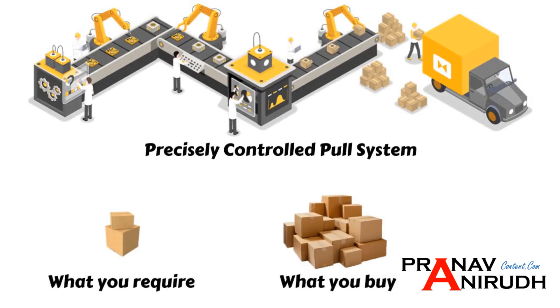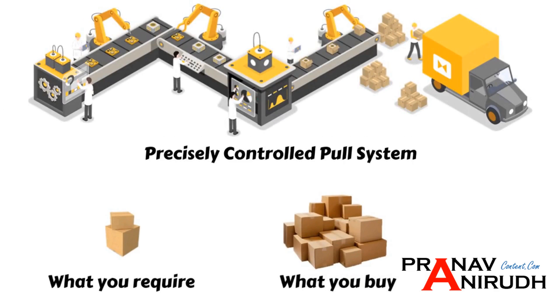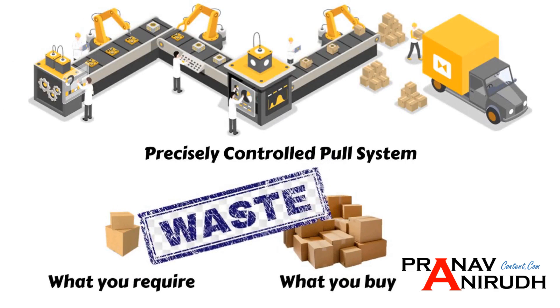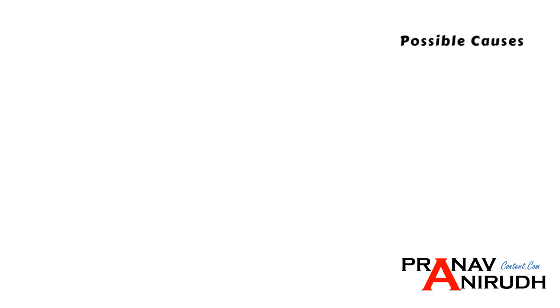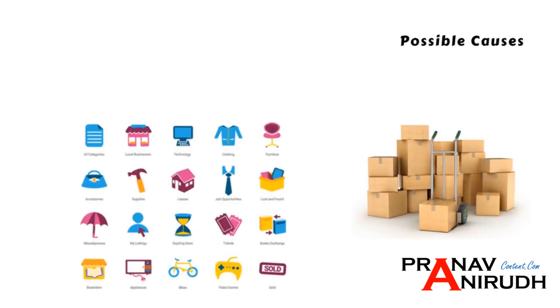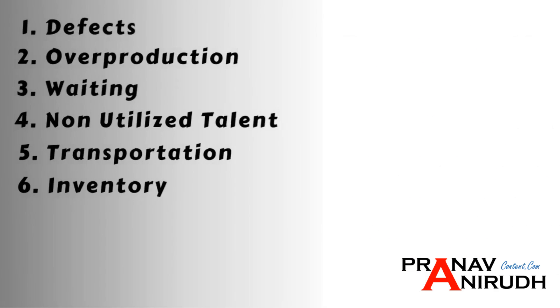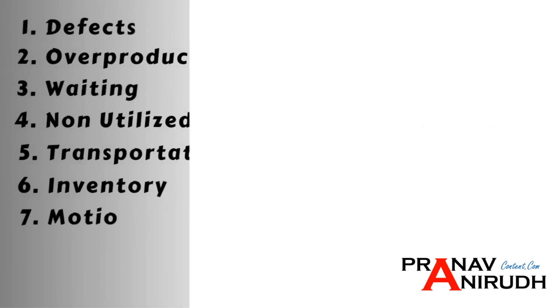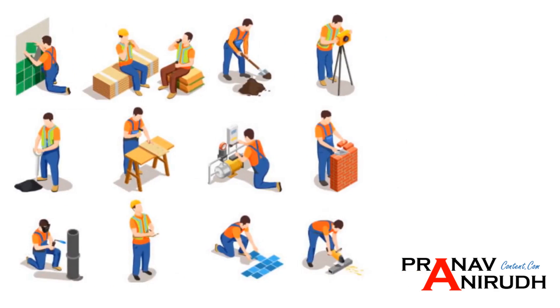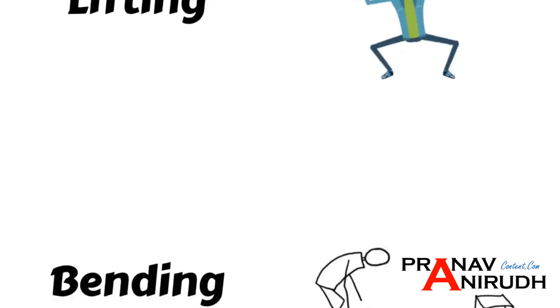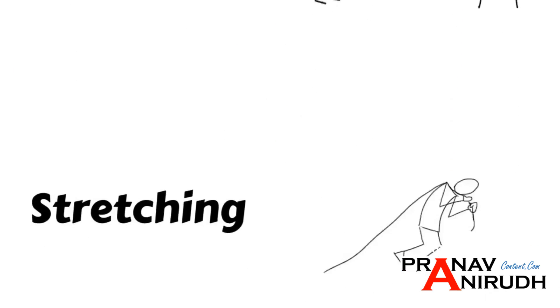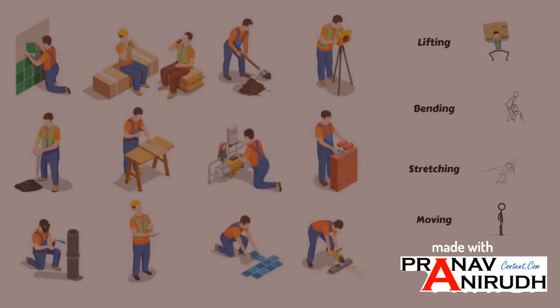The next type of waste is Inventory. Having more than the minimum stock necessary for a precisely controlled pull system generates inventory waste. Possible causes include bulk purchasing, variety of items, and improper line balancing.